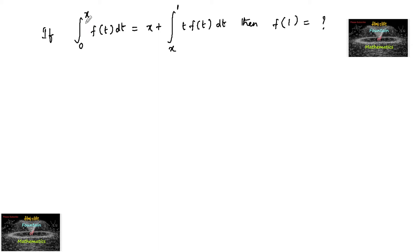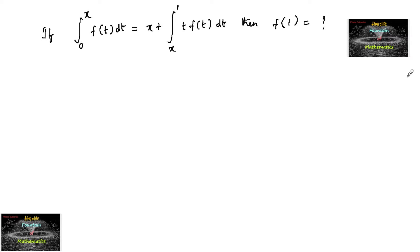If integral 0 to x of f(t) dt is equal to x plus integral over x to 1 of t·f(t) dt, then f(1) is equal to? So let's differentiate both sides.